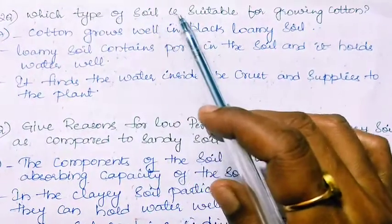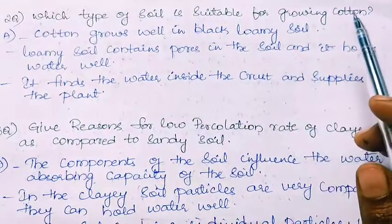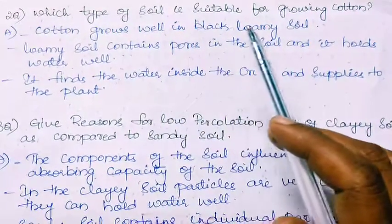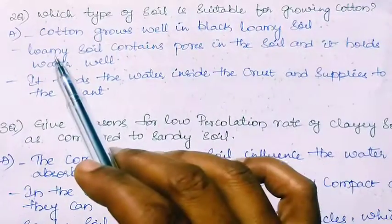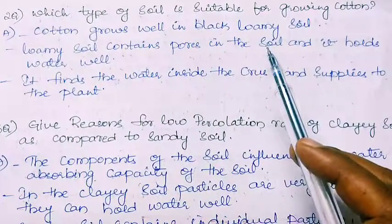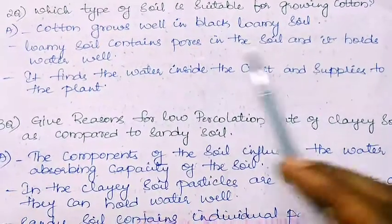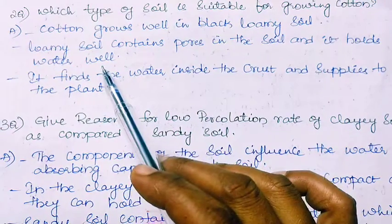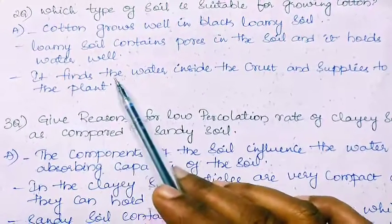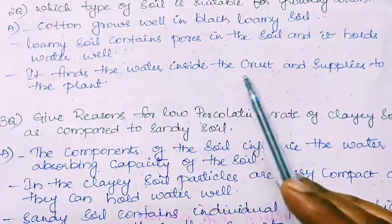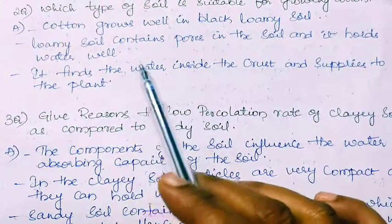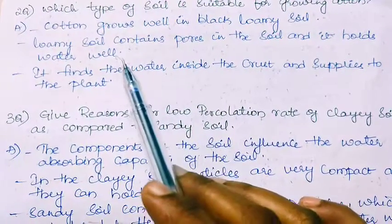Second question: Which type of soil is suitable for growing cotton? Cotton grows well in black loamy soil. Loamy soil contains pores — small holes in the soil — and it holds water well. It finds the water inside the crust and supplies it to the plant. In this way the loamy soil helps the cotton plant to grow well.